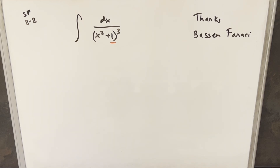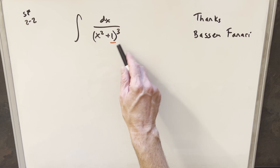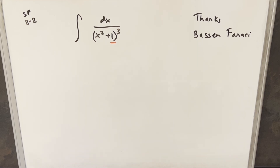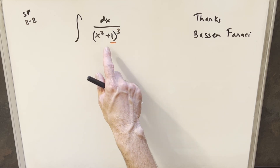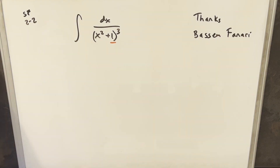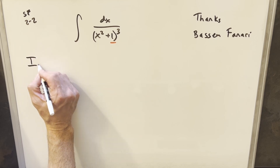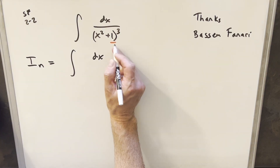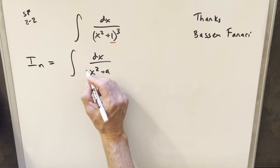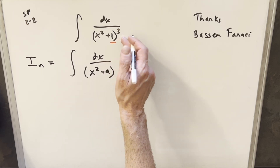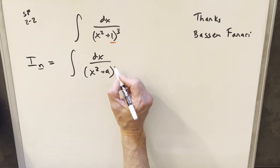In the comments, I noticed some suggestions to use a recursion method to reduce the power with a formula. Particularly, Bassem Finari outlined the full method of how to create a recursion formula. What I wanted to do here was use his method to reduce the power using integration by parts and develop a general formula. We'll write this integral using x squared plus a (where a can be any value) and use power n instead of cubed.